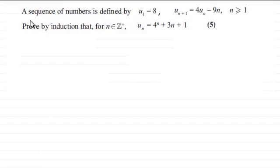Hi there. Now for this question we're given a sequence of numbers defined by the first term u₁ equals 8 and then we've got the (n+1)th term u_{n+1} is equal to 4 times the nth term u_n minus 9n, where n is greater than or equal to 1. And we've got to prove by induction that for n being any positive integer, the nth term u_n is equal to 4^n + 3n + 1 for five marks.